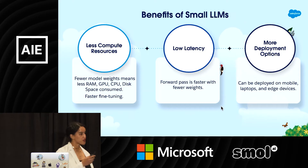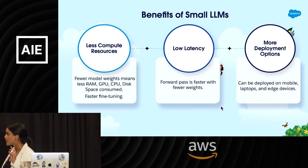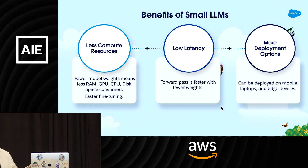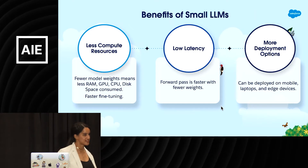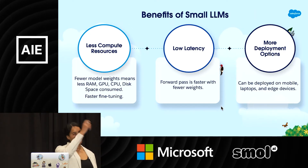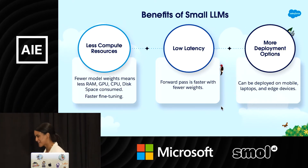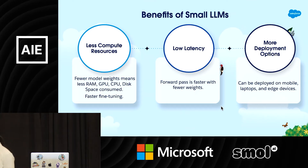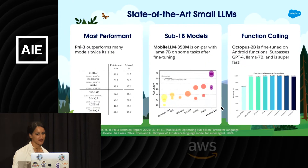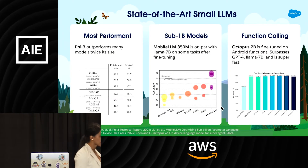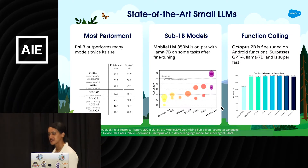Small LLMs are also low latency — fewer weights means the forward pass is faster. And together, the resource efficiency and low latency make them perfect for additional deployment options. Not only can you deploy them on the cloud or on-prem, they can also be deployed on mobile, on laptops for personal models, and on edge devices. They're super nimble and super useful. I want to tell you about a few small state-of-the-art LLMs to keep in mind as you're building solutions for your customers.